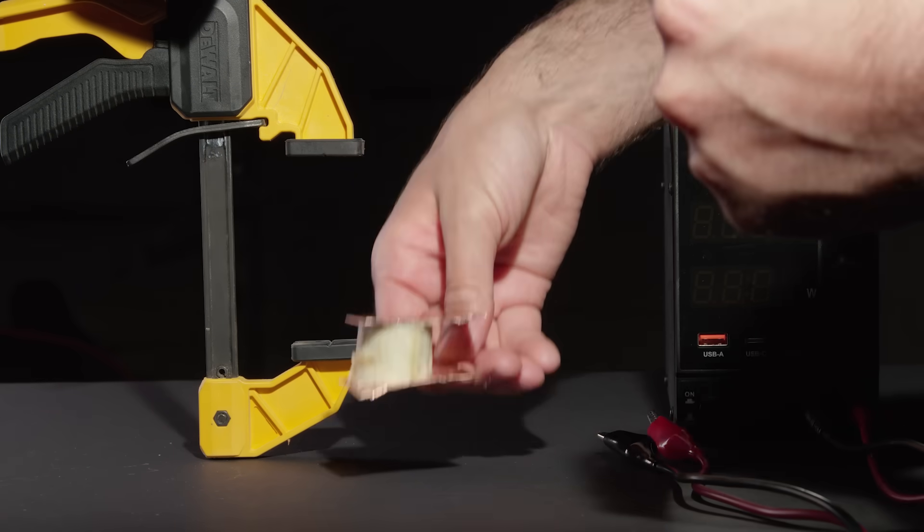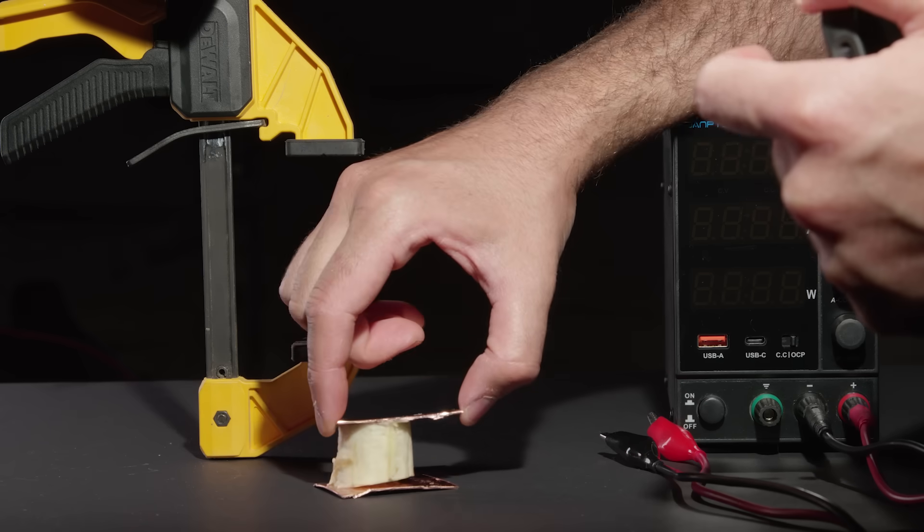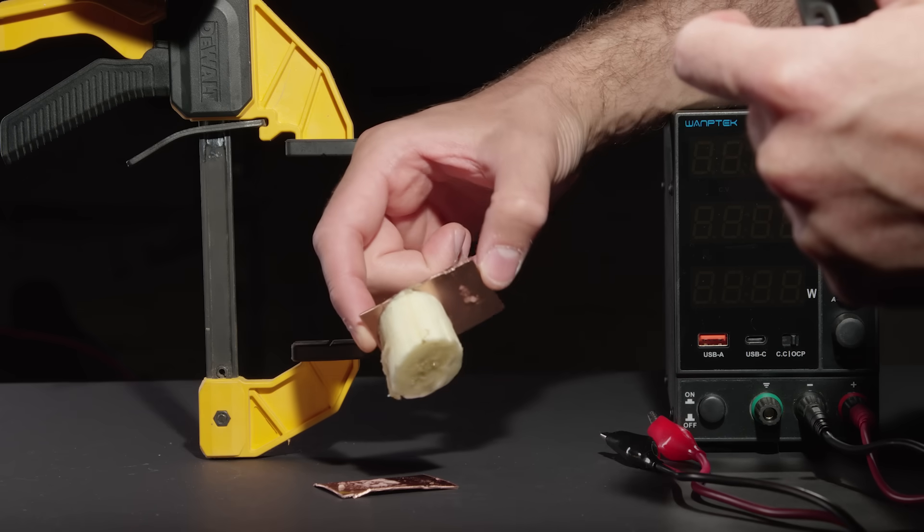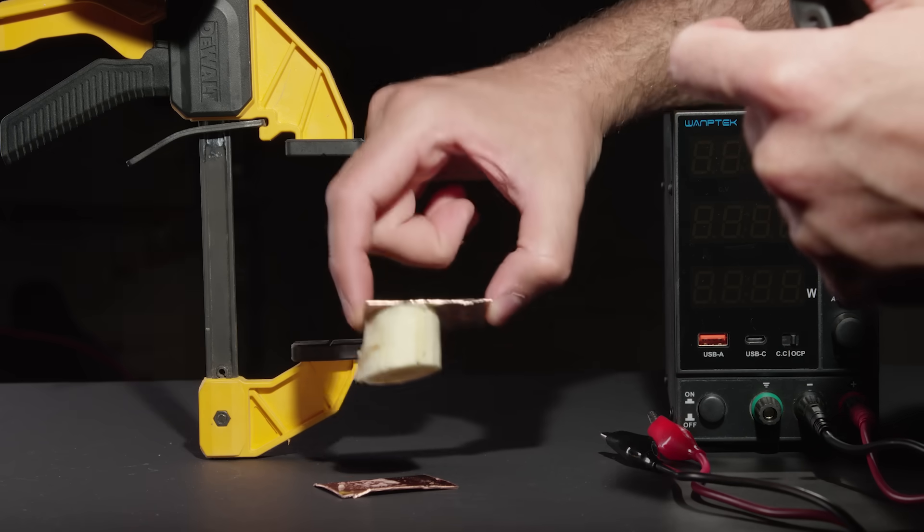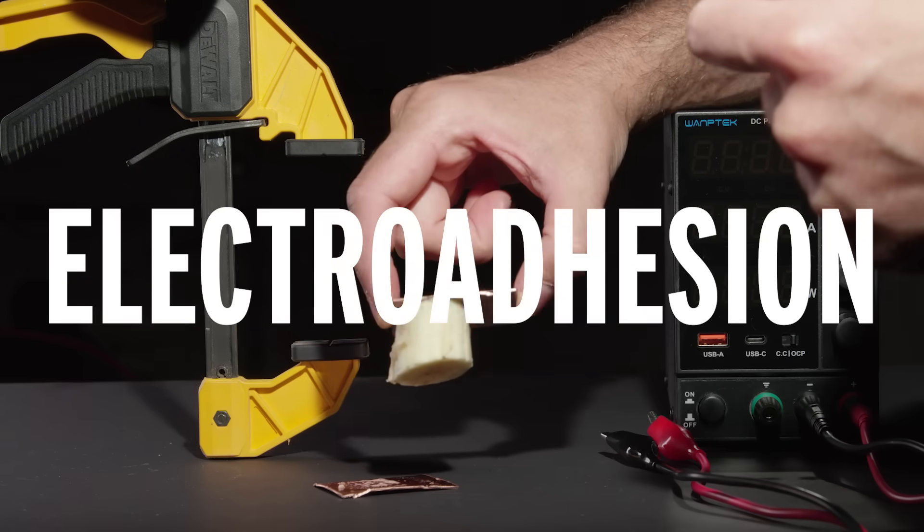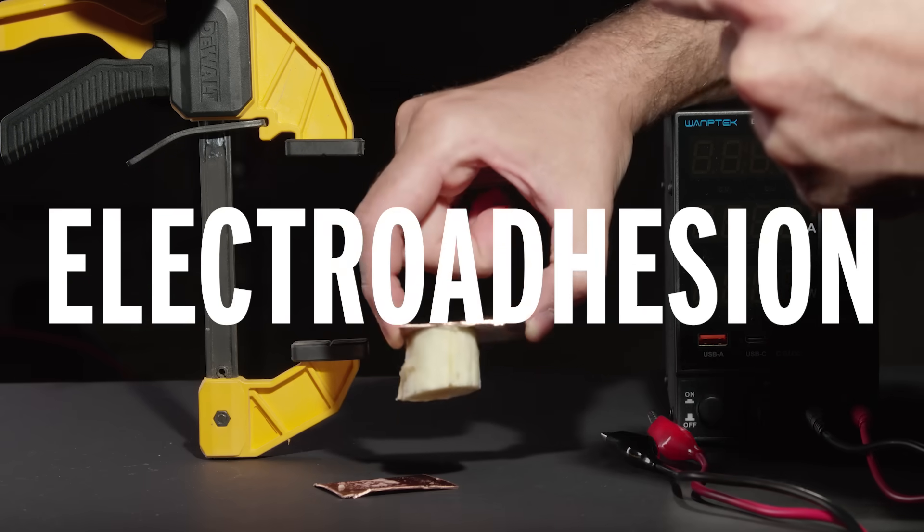0.007 amps running through that banana right now. And this time, after passing a tiny bit of current through this banana, this is called electroadhesion, gluing things together using only electrical current.